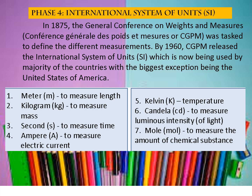Phase 4: The International System of Units, or SI. In 1875, the General Conference on Weights and Measures was tasked to define the different measurements. By 1960, CGPM released the International System of Units, or SI, which is now being used by the majority of countries, with the biggest exception being the United States of America. The SI units include: meter for length, kilogram for mass, second for time, ampere for electric current, Kelvin for temperature, candela for luminous intensity of light, and mole for the amount of chemical substance.